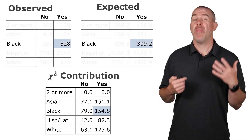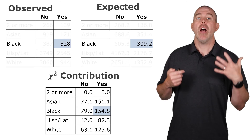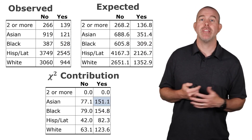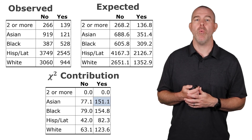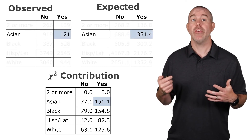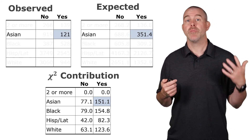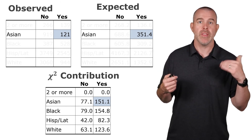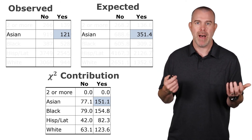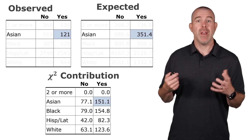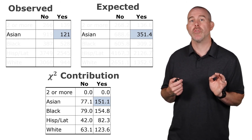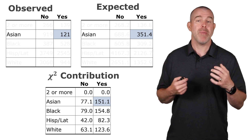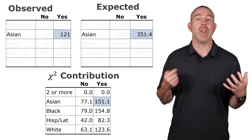If you go back to the original counts, you can see that the observed yes for that group is much higher than what we would expect. The other high one is Asian at 151.1, but it's in the other direction — the observed yes is actually much lower. Since you square the difference and divide by the expected, it ends up being positive for the chi-squared. The chi-squared contribution lets you see which groups are furthest from what we would expect.